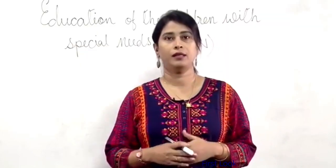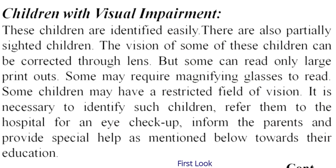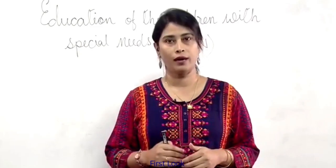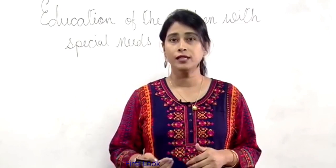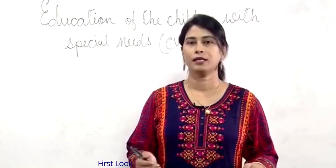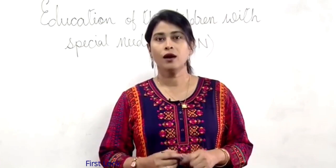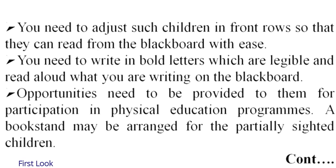Now, children with visual impairment. These children are identified very easily and are also partially sighted children. The vision of some of these children can be corrected through lens, but some can read only large printouts and some may require magnifying glasses to read. Some children may have restricted field of vision. It is necessary to identify such children and refer them to the hospital for an eye checkup, inform the parents and provide special help towards their education. You need to adjust such children in front rows so that they can read from the blackboard with ease. You need to write in bold letters which are legible and read aloud what you are writing on the blackboard.